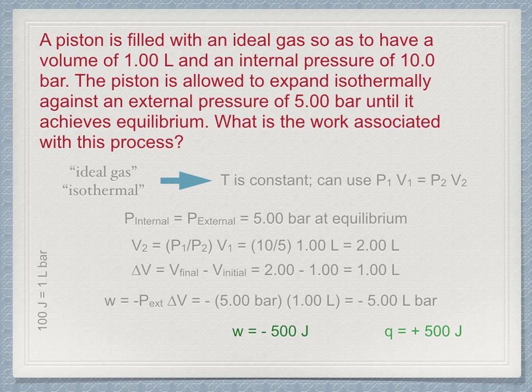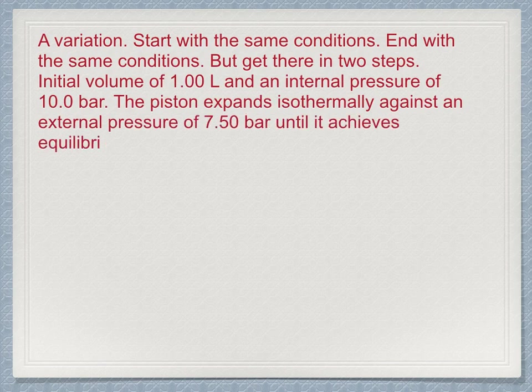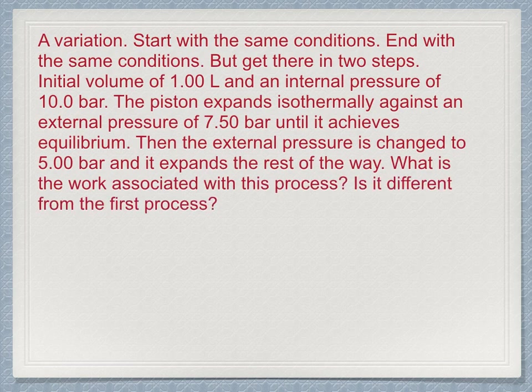Now consider this variation of the problem. We will expand in two steps. The start and the end conditions will be the same, but there is an intermediate step. So initial volume of 1 liter and an internal pressure of 10 bar, the piston expands isothermally against an external pressure of 7.5 bar until it reaches equilibrium. Then the external pressure is exchanged to 5 bar, and it expands the rest of the way. What is the work associated with this process? Is it different from the first process?